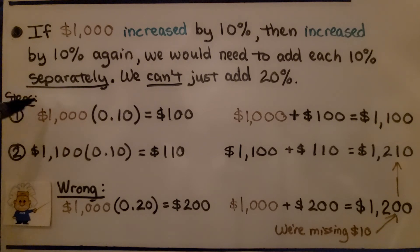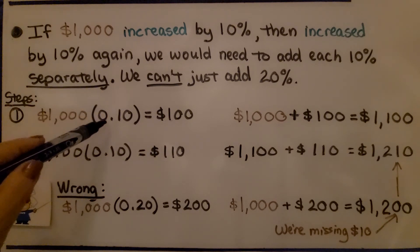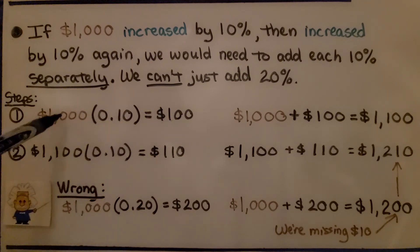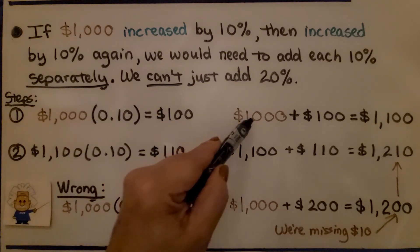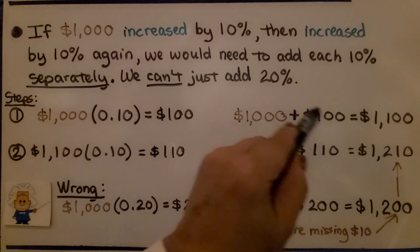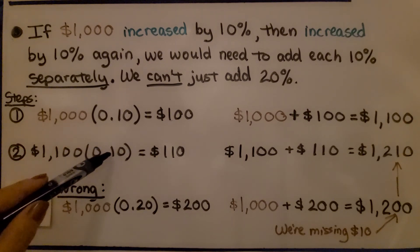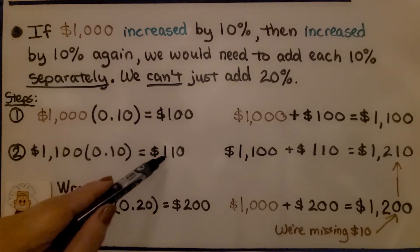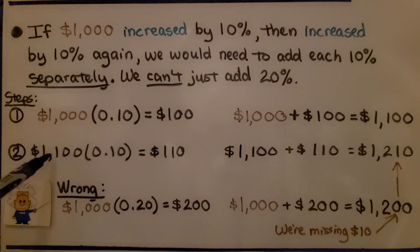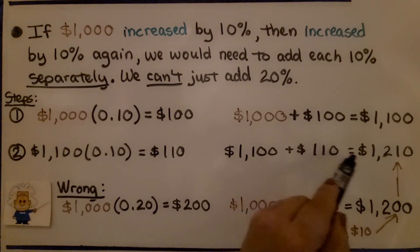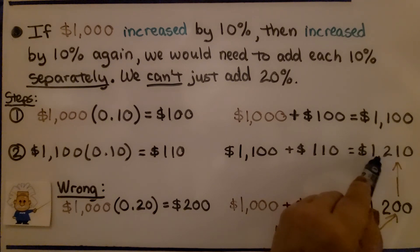In step one, we would find the first 10% increase. $1,000 times 10%, we write it as a decimal, we have 0.10. 10% of $1,000 is $100. When we add that $100 to the $1,000, we have $1,100. Now that we have $1,100, we add the next 10%. That's going to give us $110. Now we add the $1,100 to the $110, and we have $1,210.